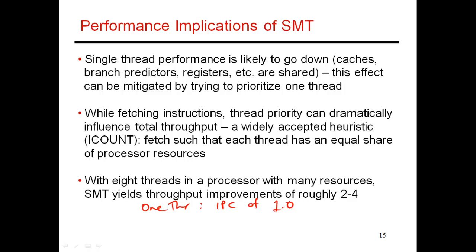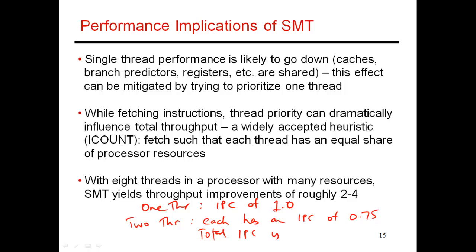When I run two threads together, each may have an IPC of 0.75. So why does each thread get slowed down? It is because all the resources are being shared. One thread no longer has access to all the registers, the entire reorder buffer, and all four functional units. There are some cycles where one thread gets slowed down because some resources are being used by the other thread. So when you do simultaneous multithreading, each thread by itself is going to slow down, but on average, my total IPC is now 1.5.